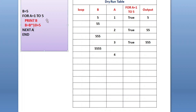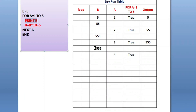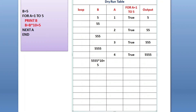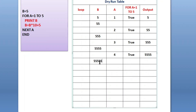After incrementing, it goes back to the for loop and checks the condition again. Now value of a is 4 — is it in the range of 1 to 5? Yes, again it is true. It goes inside the loop and prints the value of b: the latest value is 5555, so 5555 is printed. Then b = 5555 into 10 plus 5, which gives 55555.